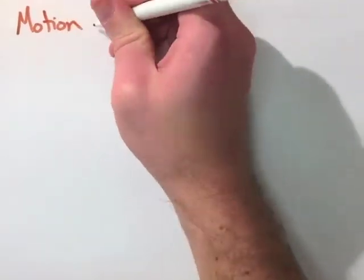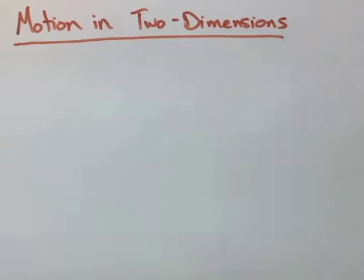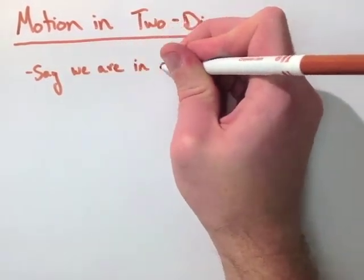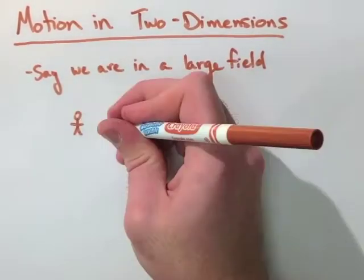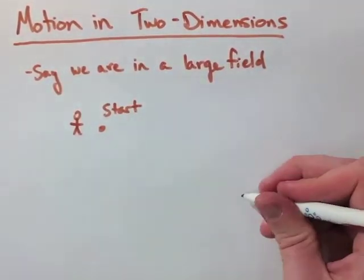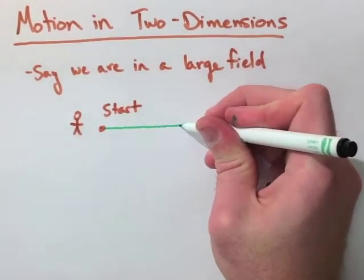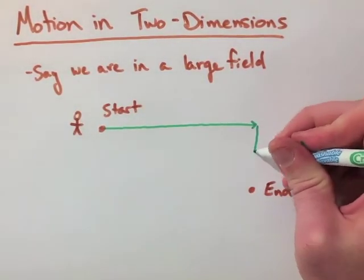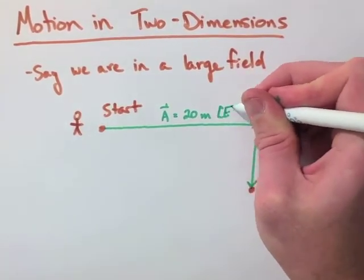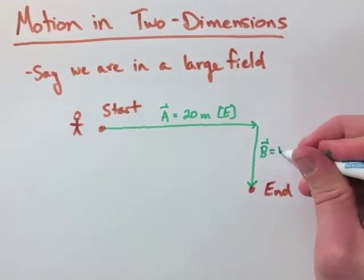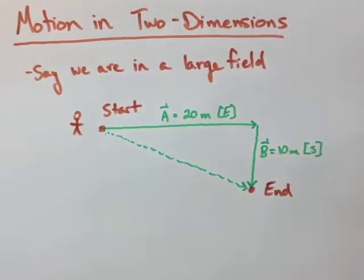Next, let's look at motion in two dimensions, meaning that if we're walking, we're walking up and down or right and left. Let's look at right and then down. So if we're in a large field, let's say we want to walk across this field, we have a starting point and a finish point, but let's say we can't walk straight through the middle. So first, we're going to walk 20 meters east and then 10 meters south. Now this is going to get us across the field. We couldn't go right through the middle, but if we look at our final displacement, that's how we have to measure it.